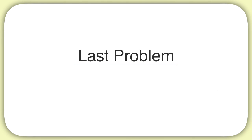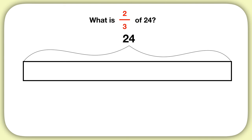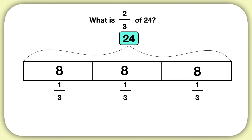Here's your last problem for this video. What is two-thirds of twenty-four? Start with a bar model that represents twenty-four. Then, to find two-thirds, split the bar into three pieces. That way, each piece will be one-third of the total. When twenty-four is split up into one, two, three pieces, each piece will have eight in it. And because we're looking for two-thirds of twenty-four, we'll highlight two of these pieces. Two-thirds of twenty-four is sixteen.